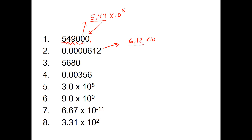We have to figure out how many places, but before we do that we need to determine: if I'm going to turn 6.12 into 0.0000612, am I going to have to make 6.12 bigger or smaller? Is 0.0000612 bigger or smaller than 6.12? The answer is it is smaller. Since it is smaller, the exponent is going to be a negative power, so times 10 to the negative power. To determine how many, we take this decimal place 1, 2, 3, 4, 5 places to its home at 6.12. So 6.12 times 10 to the negative 5th is the same as 0.0000612.